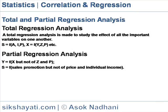In case of multiplicity of variables, the effect of all the important variables on one another is considered in total regression analysis. While partial regression analysis is made to study the effect of one or two relevant variables on another variable, keeping other variables constant. The equation takes the form: Y is equal to F, a function of X, but not of Z and P. S is equal to F, a function of sales promotion, but not of price and individual income.